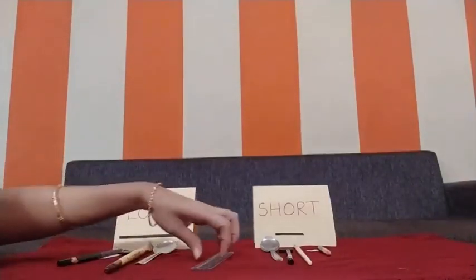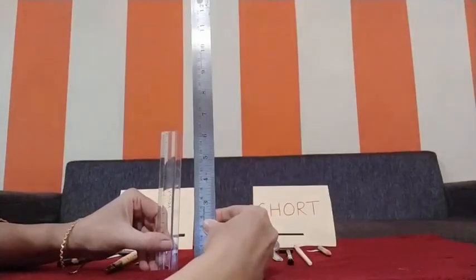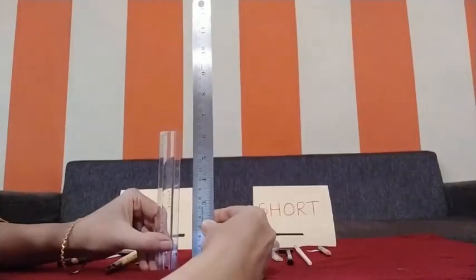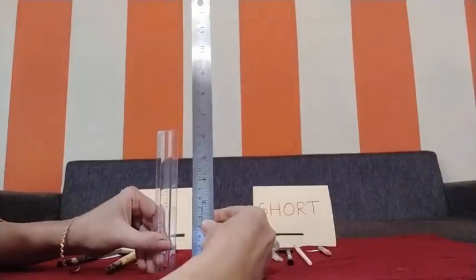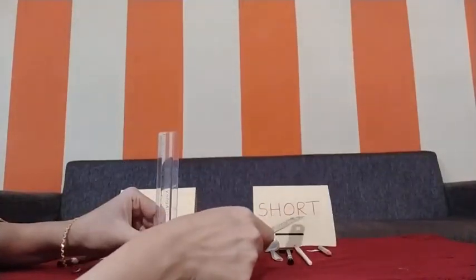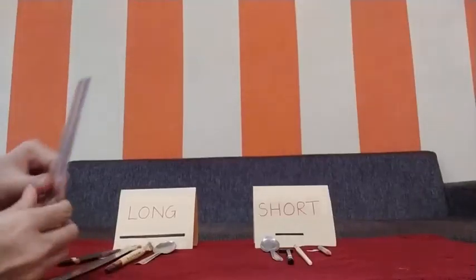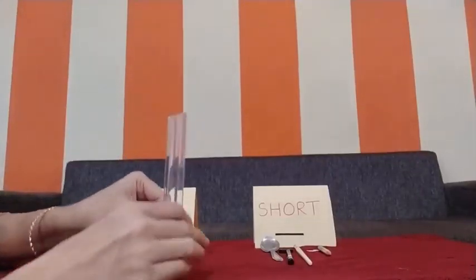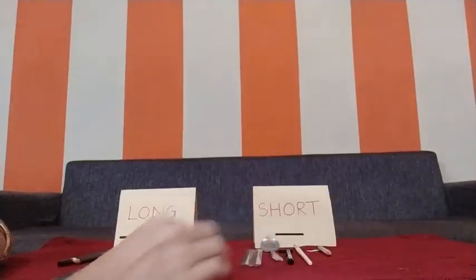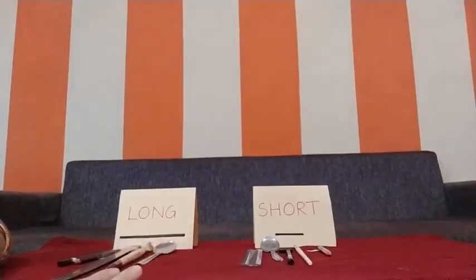Now we can see two scales. Tell me which scale is long and which scale is short? Do you think this is short? Not at all — see the length. This is long and this is short. So where will this long scale go? The word short is written here, so this long scale will come here where long is written. And this short scale will come here where short is written.